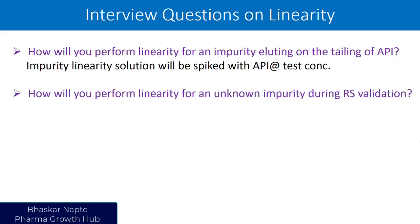The second important question is: how will you perform linearity for an unknown impurity during related substances validation? The unknown impurity standard is not available to you. You may have different unknown impurities eluting at different retention times, but how do you ensure those impurities will have a linear response at varied concentrations? Because of the limitations of not having impurity standard concentrations, you have to take support of the API. Perform the linearity for the API, and that will suffice the requirement for unknown impurity linearity. You can study the LOQ of the API and draw a linearity range from LOQ to 120% of the limit for the unknown impurity level.